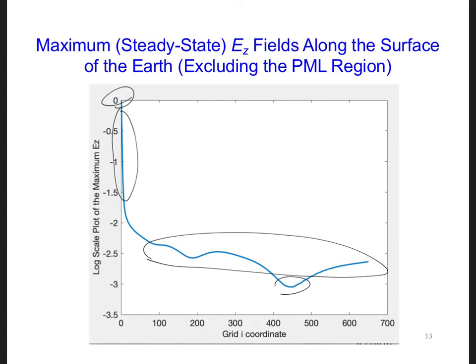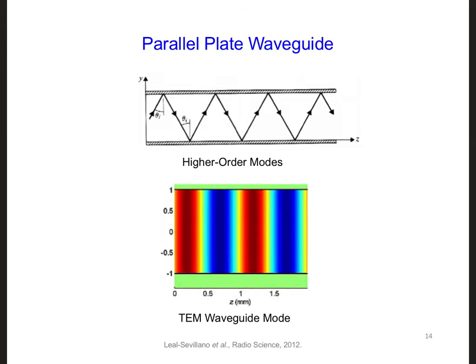However, around 430 grid cells away, we see a null in the waveform. Here is a diagram we looked at earlier of a parallel plate waveguide, which is what we're modeling. Here is the ground, and here is the ionosphere. Different modes propagate at different angles, theta.